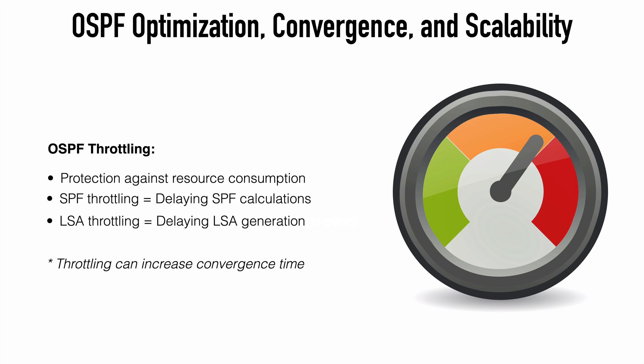So why would we want to throttle these mechanisms? If we have a link flapping — going up and down continuously — this causes a situation where we're receiving lots of LSAs in a short window of time, each triggering an SPF calculation and utilizing CPU resources. That high CPU usage can cause instability, or at the very least waste CPU resources and slow down the router. Throttling techniques can delay SPF calculations and slow down the frequency at which LSAs are generated, though it's worth noting this does increase convergence time.